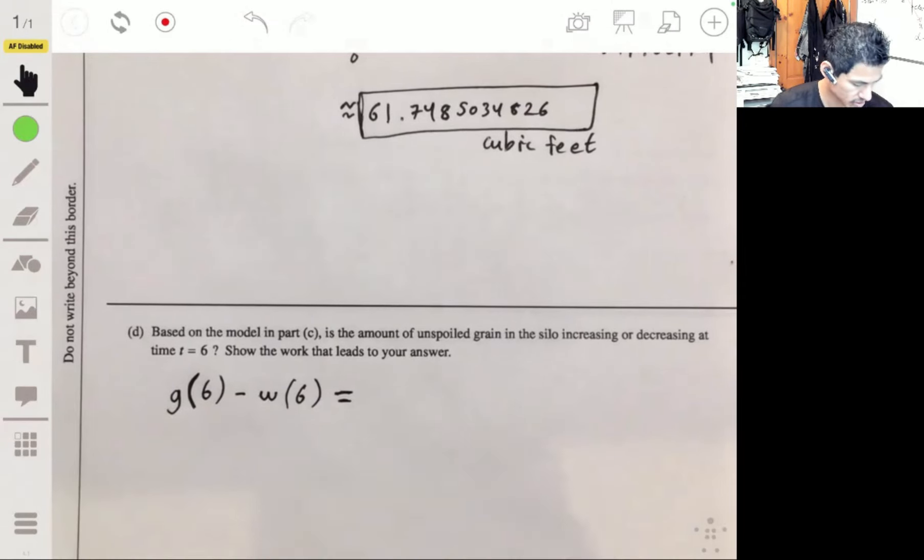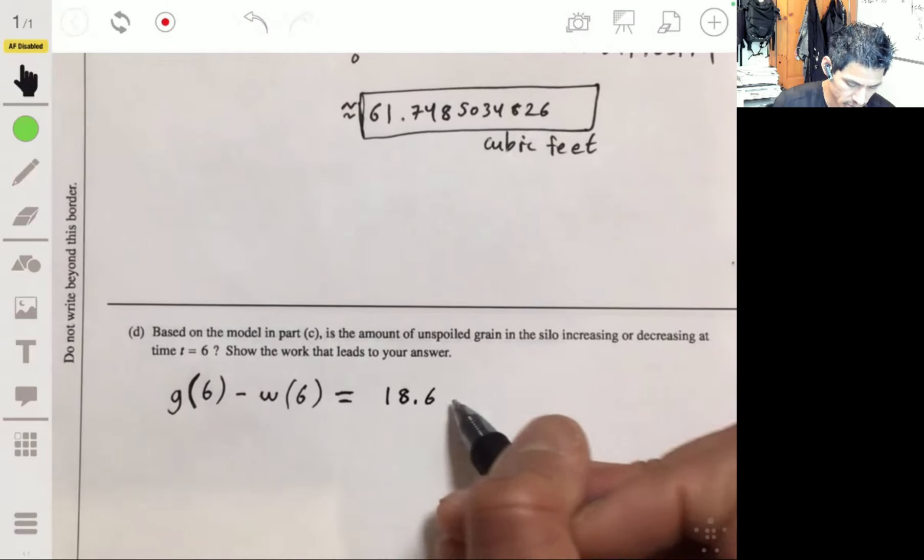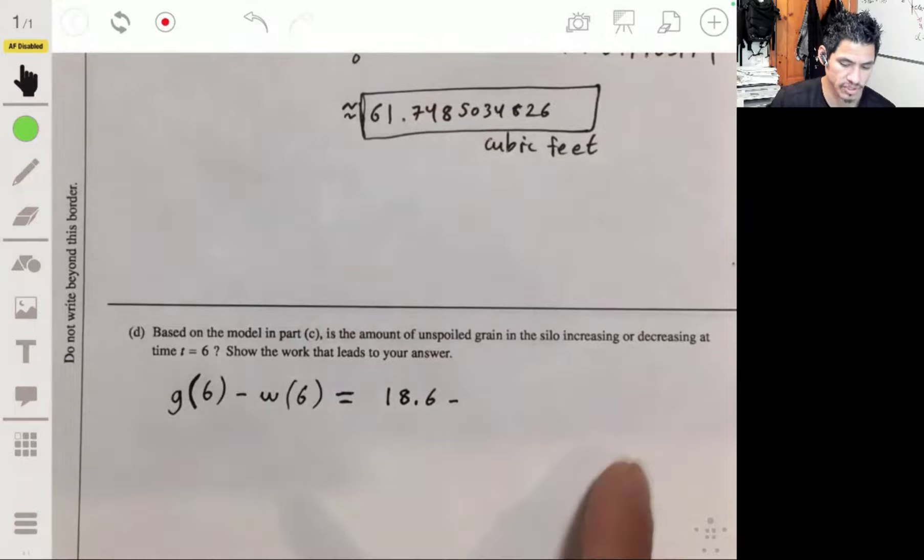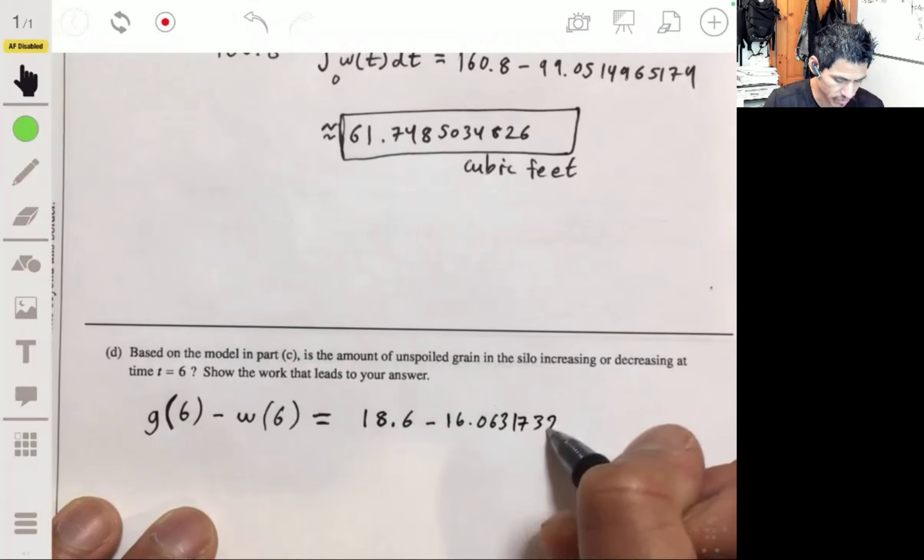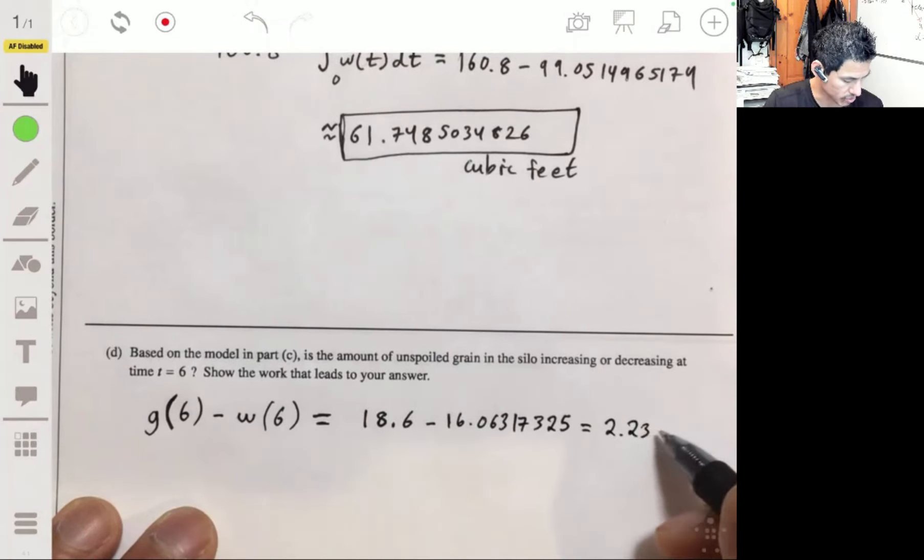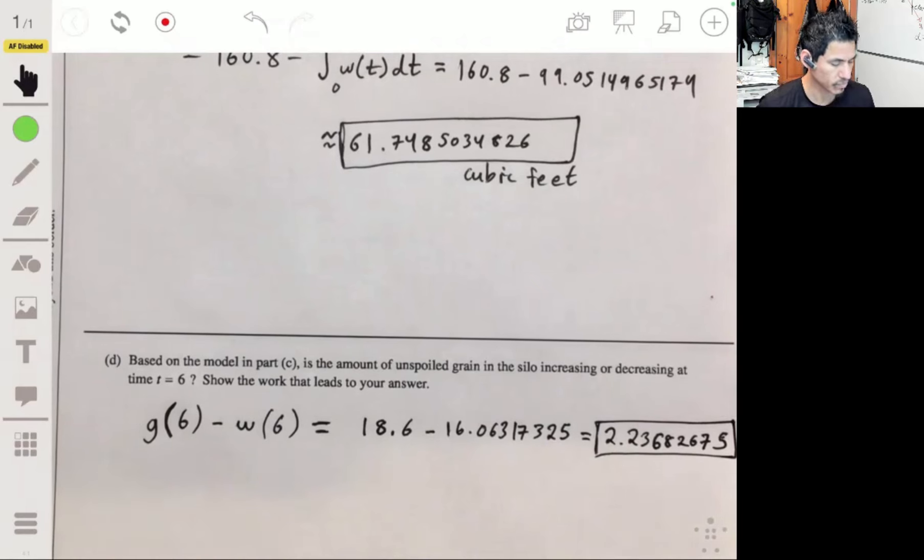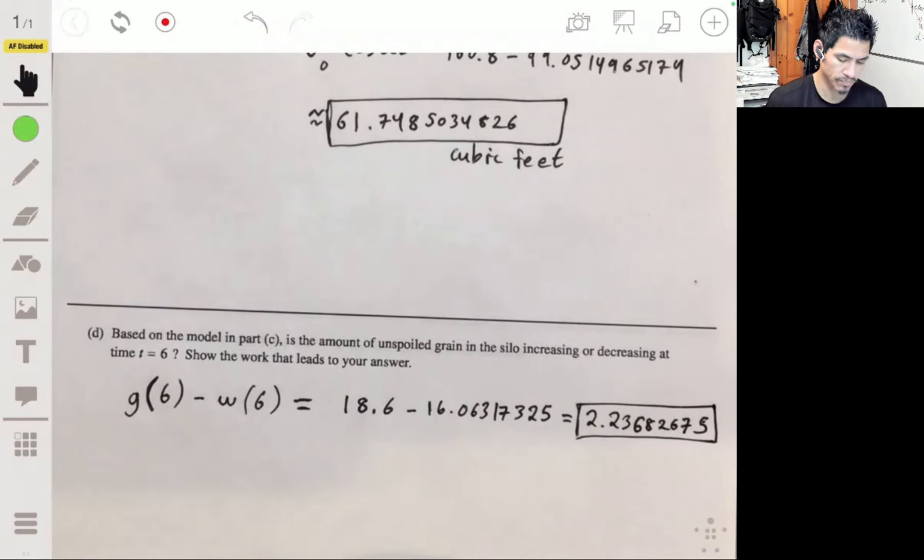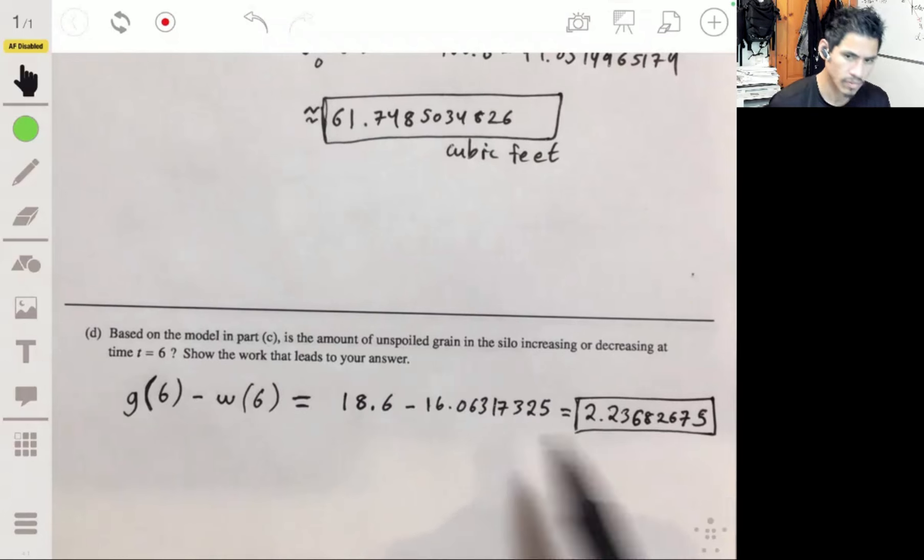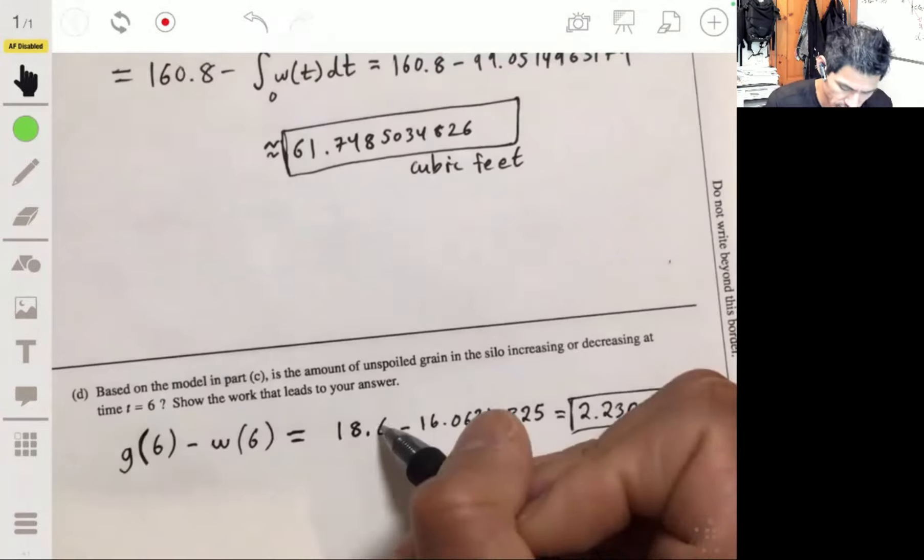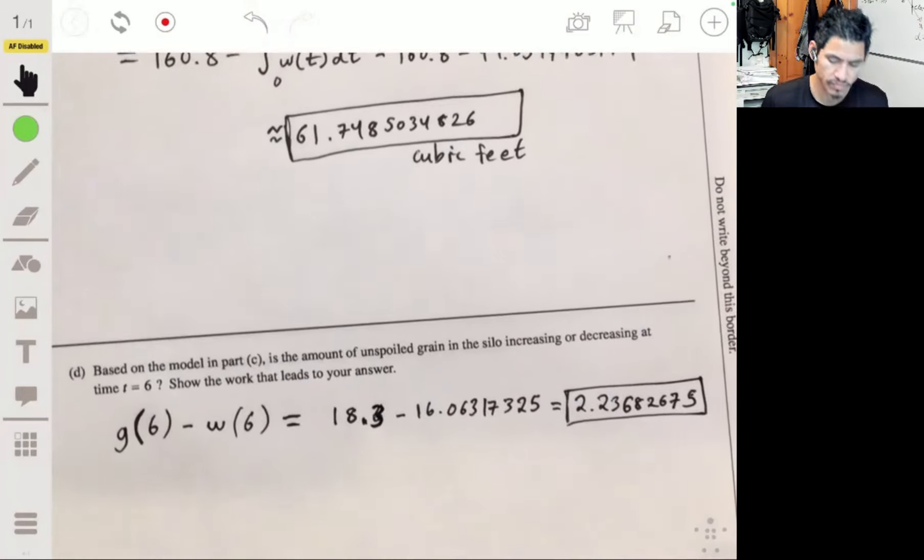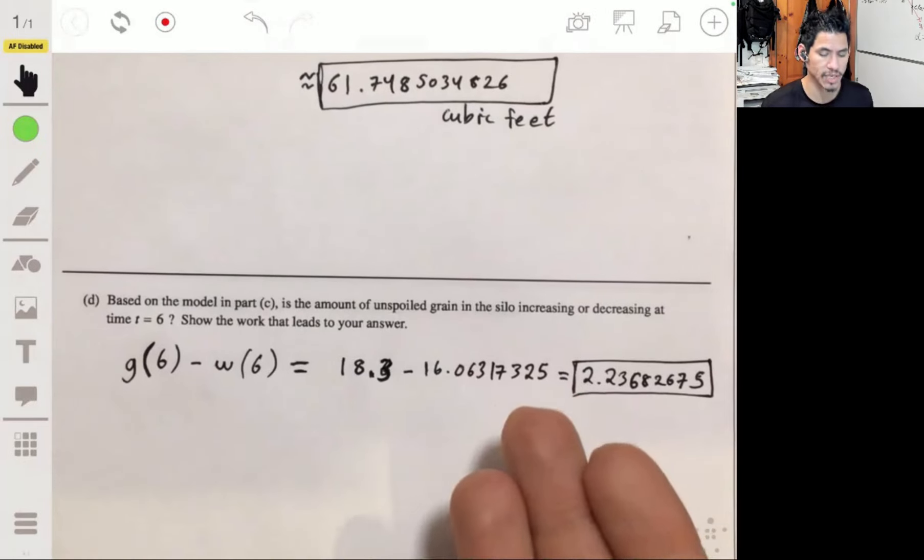So calculating this, 18.6, and again using your calculator, punching in the previous equation for six in there, we'll end up with 16.06317325. End up with about 2.23. Now, since this is positive, then we can say that it's increasing. And I think I wrote the wrong thing. I think it should be 18 point, yeah, looking back at the table, it's 18.3. Let me just fix that. 18.3. In either case, it's still positive. So then, since it's positive, then we can say that it's increasing.